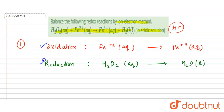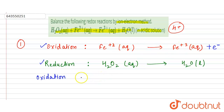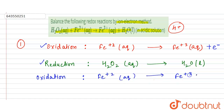Now we balance both reactions. For the oxidation reaction, Fe²⁺ is converted to Fe³⁺ — there is a loss of one electron because there is a difference of one in their oxidation states. So the balanced oxidation half-reaction is: Fe²⁺ (aq) → Fe³⁺ (aq) + e⁻.